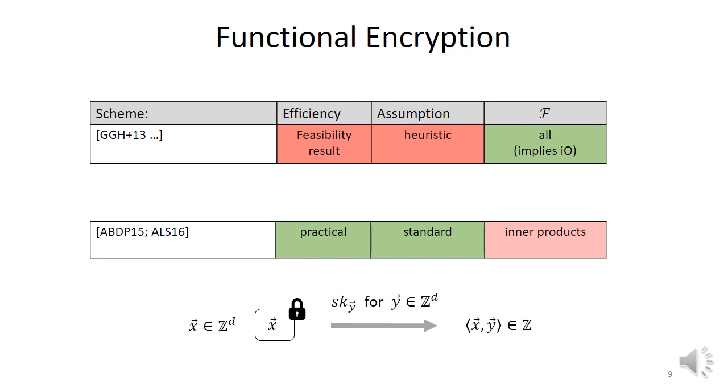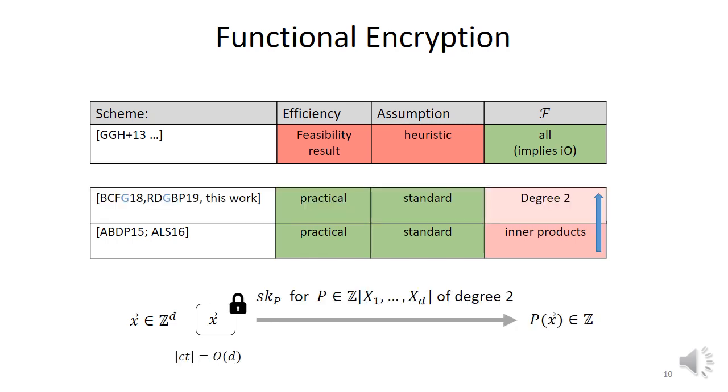This gives a fine-grained access to the encrypted data as opposed to all or nothing, and it captures already NC0 circuits. Later on, Baltico et al gave the first public key FE where functional secret keys are associated with degree 2 polynomials and where the ciphertext remain succinct. That is, their size grows proportionally to the dimension of the vector being encrypted, and not quadratically. That means you can compute more advanced statistics on encrypted data. It's useful in its own right and has some implication, for instance, to predicate encryption and traitor tracing.